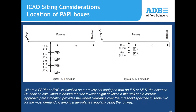For the ICAO market, PAPIs are placed 15 meters off the runway edge with approximately 9 meters separating each light unit. An abbreviated two-box PAPI is also available for both the FAA and ICAO markets.